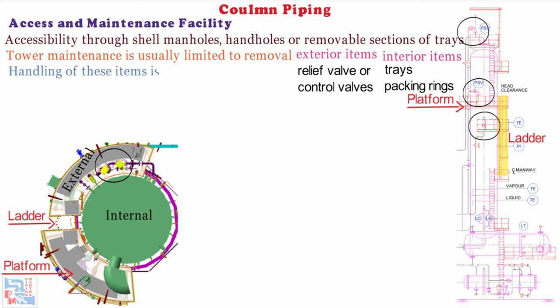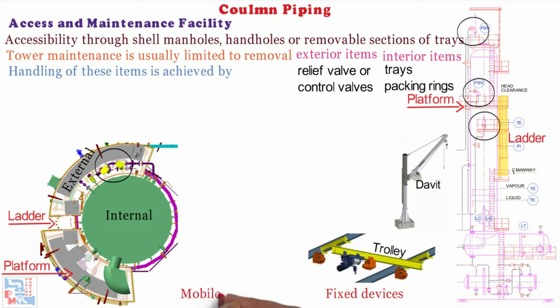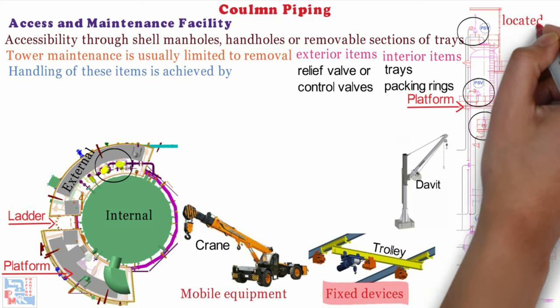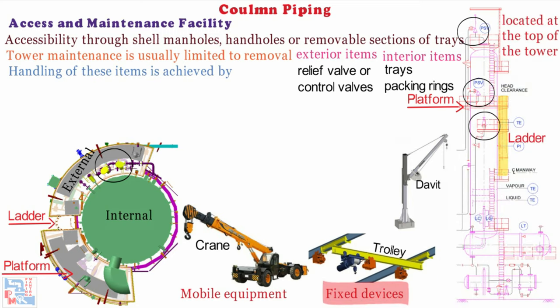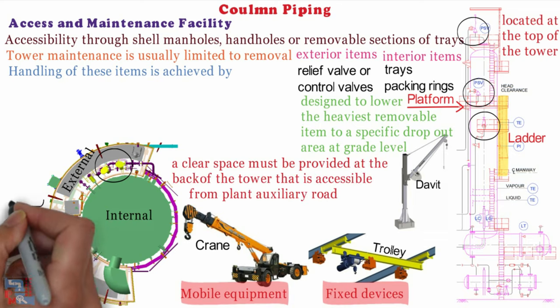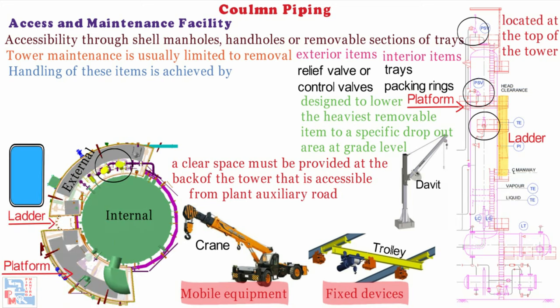Handling of these items is achieved by fixed devices for example davits or trolley beams or mobile equipment for example cranes. When davits or beams are used they are located at the top of the tower accessible from a platform and designed to lower the heaviest removable item to a specific dropout area at grade level. When mobile equipment is used a clear space must be provided at the back i.e side opposite to pipe rack of the tower that is accessible from plant auxiliary road. The access and maintenance facilities to be considered in the piping arrangement around a tower on free standing columns.